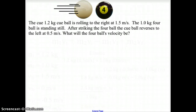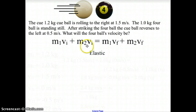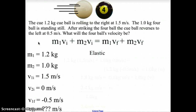Now let's look at an example of an elastic collision. We have a cue ball, 1.2 kg, rolling to the right at 1.5 m/s. The 1.0 kg four ball is standing still. After striking the four ball, the cue ball reverses to the left at 0.5 m/s. What will the four ball's velocity be? This is an elastic collision, so the two masses will be separate after the collision and we need two separate final velocities. M1 is 1.2 kg, m2 is 1.0 kg, vi1 is 1.5 m/s, vi2 is 0 m/s, vf1 is −0.5 m/s (to the left), and vf2 is what we are looking for.